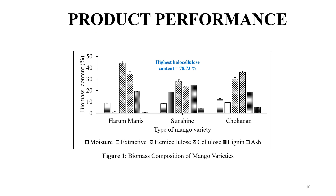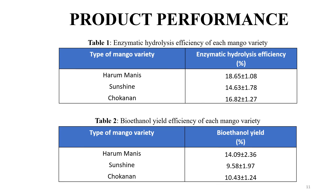As for the product performance, undoubtedly Harum Manis is chosen as the most apt source for bioethanol production compared to Sunshine and Chokanan. This is because, in terms of biochemical composition, Harum Manis has the highest holocellulose content, and a precise conversion of holocellulose content favors bioethanol production. As tabulated here, Harum Manis mango leaves also recorded the highest enzymatic hydrolysis efficiency and bioethanol yield, further justifying the product performance.